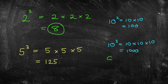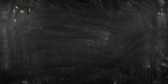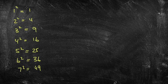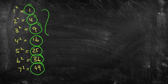You're often asked about the first several squared numbers. 1 squared is 1, 2 squared is 4, 3 squared is 9, 4 squared is 16, 5 squared is 25, 6 squared is 36, 7 squared is 49. The numbers 1, 4, 9, 16, 25, 36, and 49 are what we all refer to as squared numbers.